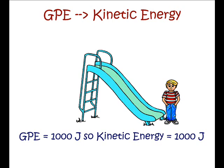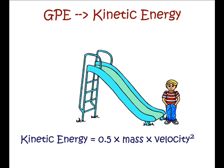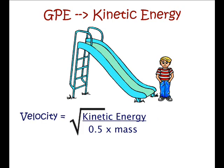So assuming all of that 1,000 joules is converted to kinetic energy, that means his kinetic energy is 1,000 joules, so we can work out what his velocity is. We do that using the equation for kinetic energy, which equals half times mass times velocity squared. We know what the kinetic energy is and we know what his mass is, so we want to calculate velocity. We need to rearrange the equation. The rearrangement is velocity equals the square root of kinetic energy divided by half times mass. We then put in what we know: 1,000 joules for kinetic energy and 50 kilograms for the mass, giving us the square root of 1,000 divided by half times 50.